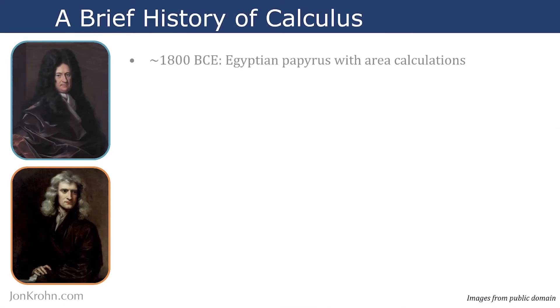The earliest known records of calculus calculations, or things related to calculus, come from about 4,000 years ago, around 1800 before the Common Era. We have an Egyptian papyrus from that era with area calculations on it, and that's related to the idea of integral calculus, which allows us to find the area of shapes.